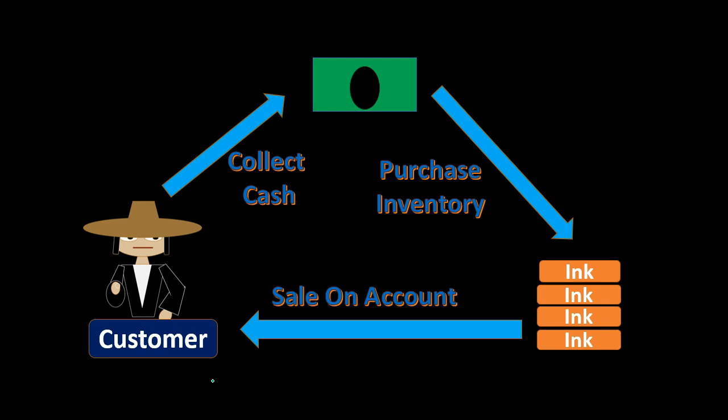Don't mix this up with the other cycles we have talked about, which are the standard purchasing cycle where we think of just the purchasing itself. We may not be purchasing just for cash — we might be purchasing on account and have a similar cycle in this process as well, meaning we purchase inventory on account and at a later time we pay what we owe, paying off the account.